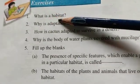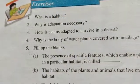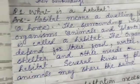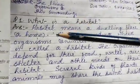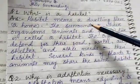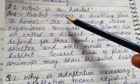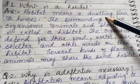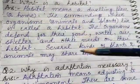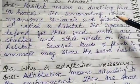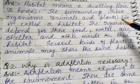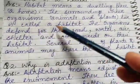Go to question: what is habitat? Habitat means a dwelling place. The surroundings where organisms, animals and plants live is called a habitat.